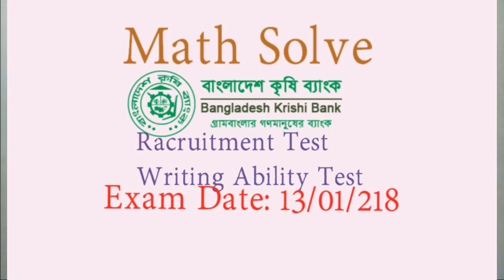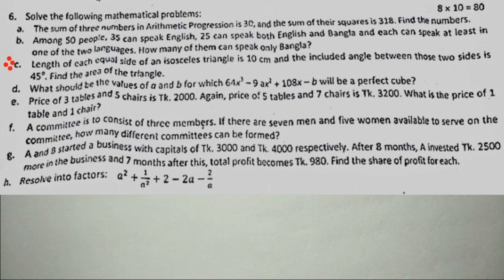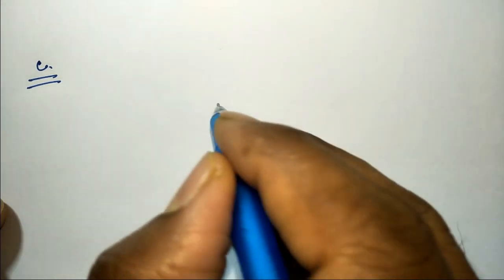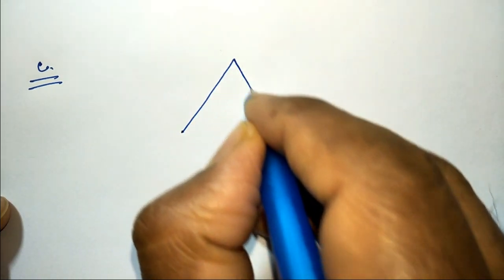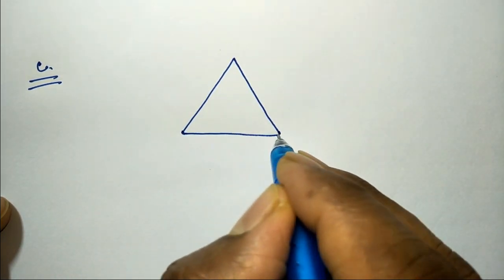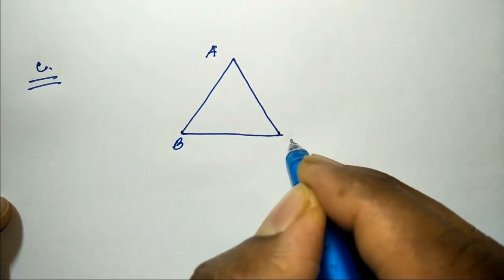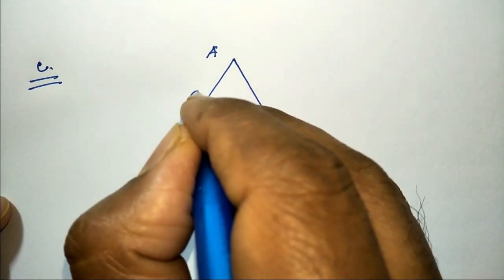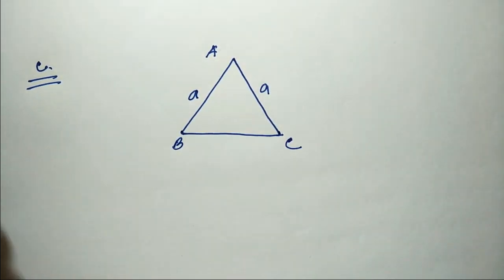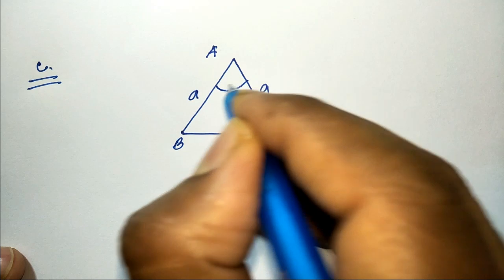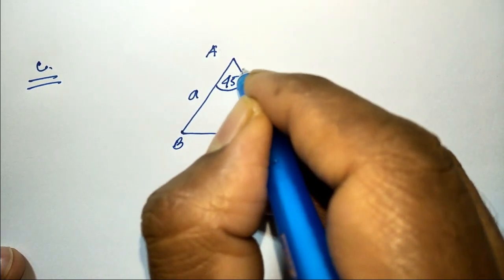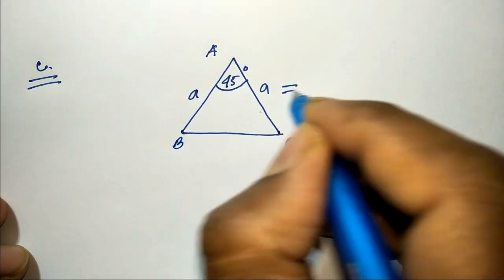Given: two sides of a triangle, AB and AC, are each 10 centimeters, and the included angle between those two sides is 45 degrees. Find the area of the triangle. Let AB equal AC equal 10 cm, and angle A equal 45 degrees.